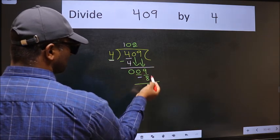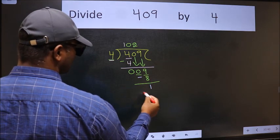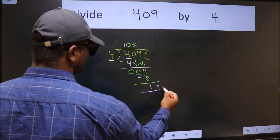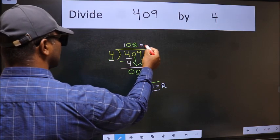No more numbers to bring it down. So we stop here. This is our remainder and this is our quotient.